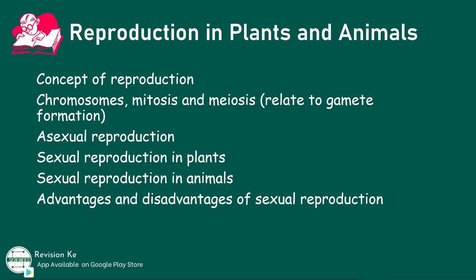You need to differentiate between internal and external fertilization as exhibited by amphibians and mammals, and relate the structure of the human reproductive system to its functions. You also need to describe the role of hormones in human reproduction, identify the symptoms, and explain the methods of transmission and prevention of sexually transmitted infections.